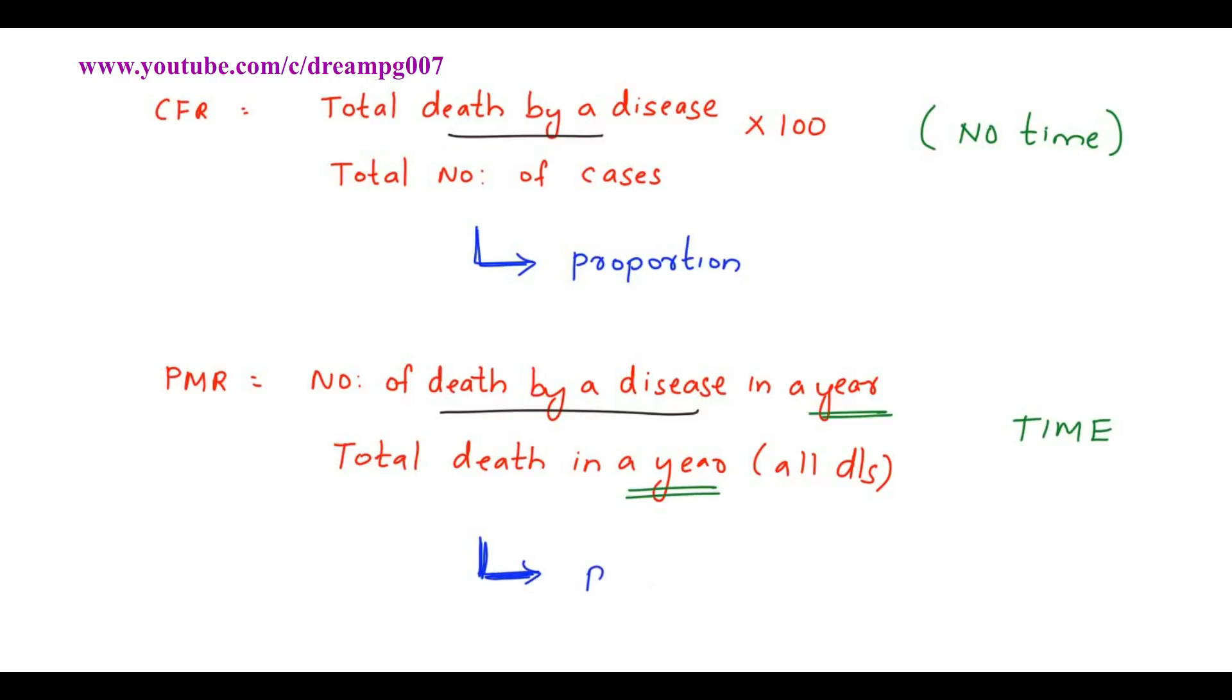Hope that you understand the concept. Follow this chart for easily understanding tools of epidemiology. Ask this question: whether the numerator is a part of the denominator? If no, then the tool of epidemiology is ratio.